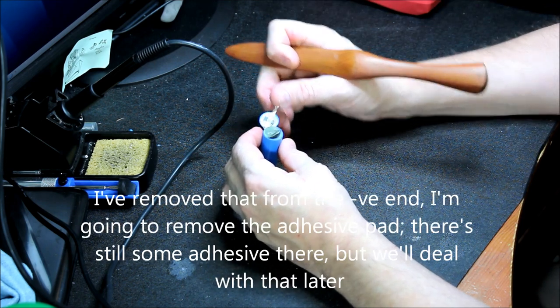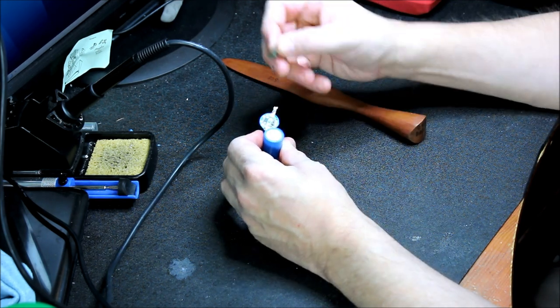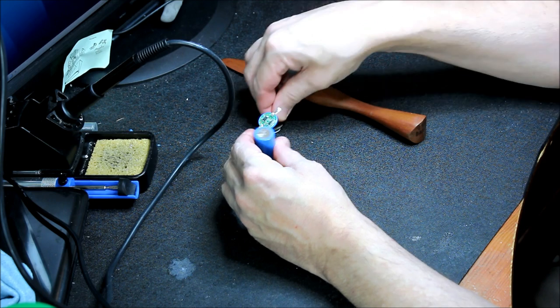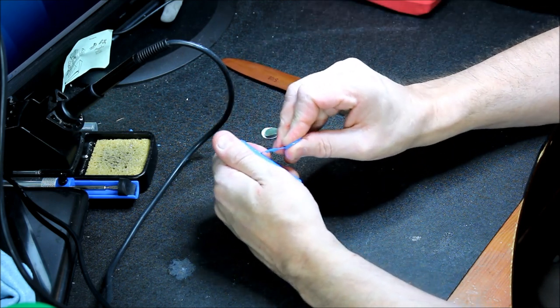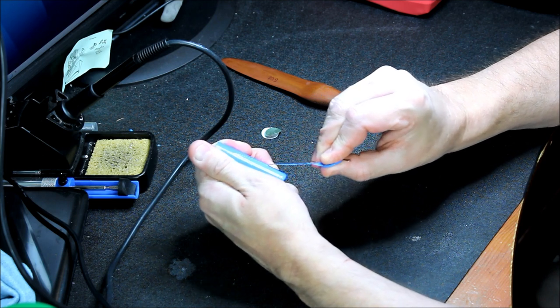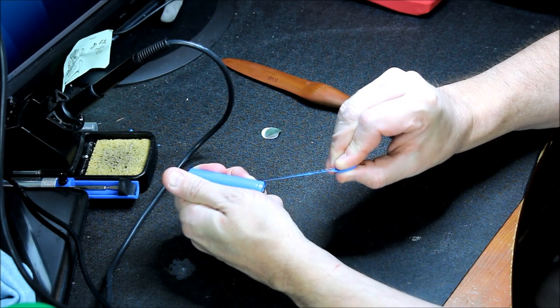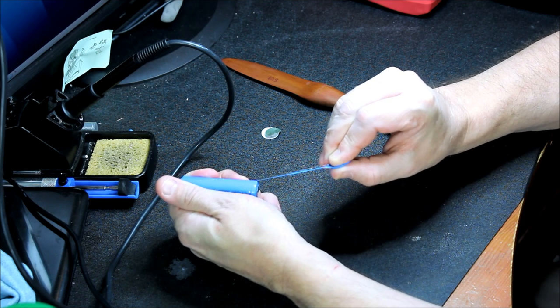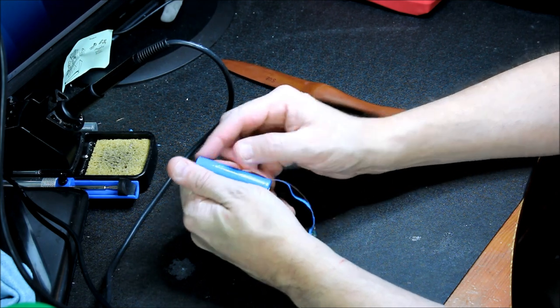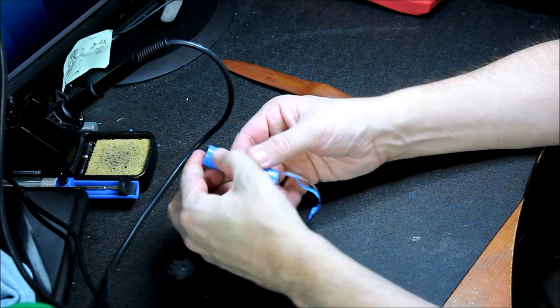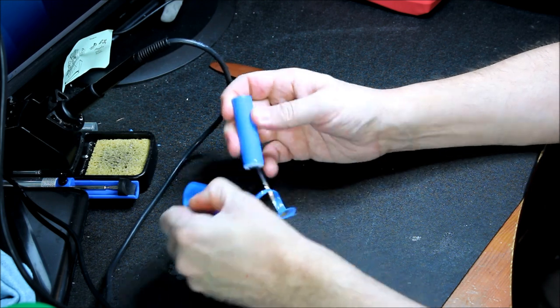Okay, I'm going to remove the adhesive pad. I will deal with that later. Rip this all the way down here, and as you see there is a second layer of insulation.